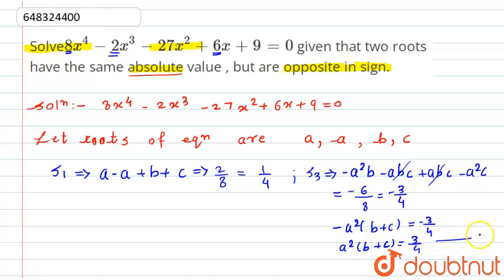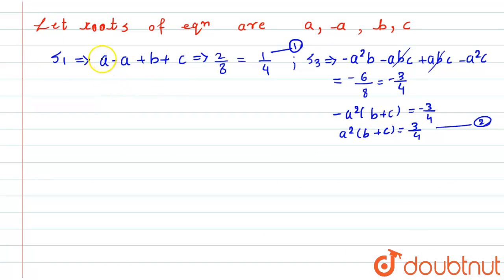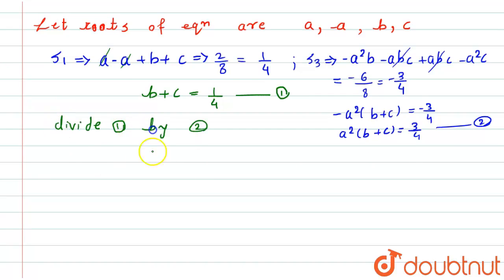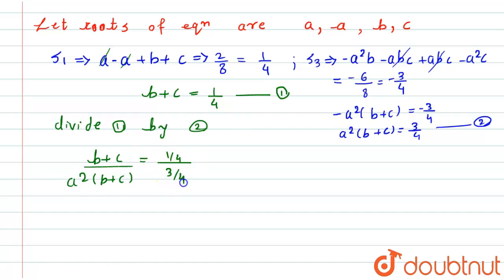Let b plus c equals 1 by 4 be equation number 1, and a²(b plus c) equals 3 by 4 be equation number 2. Dividing equation 1 by equation 2: (b plus c) divided by a²(b plus c) equals (1/4) divided by (3/4). The b plus c terms cancel, giving 1 divided by a² equals 1 by 3. Therefore a² equals 3, and a equals root 3.